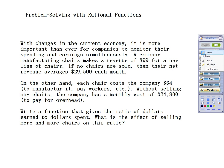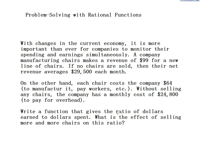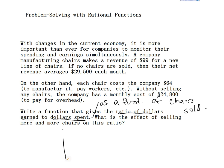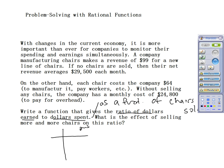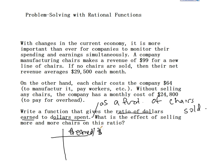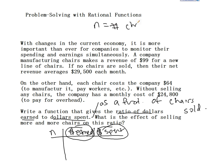To clarify, we want to find a function that gives the ratio of dollars earned to dollars spent as a function of the number of chairs sold. We need to figure out how to determine dollars earned and how to determine a function for dollars spent. Let's call N the number of chairs — or you can call it X if you want.